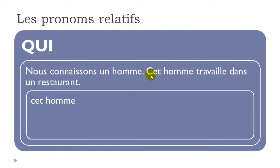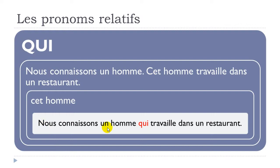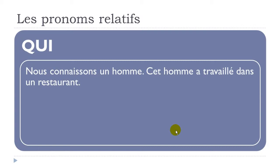So the combined sentence becomes: 'nous connaissons un homme qui travaille dans un restaurant'. It could be a person, as in that example, but it could also be an object or a thing. Let's see the same sentence with the passé composé: 'nous connaissons un homme' — 'cet homme a travaillé dans un restaurant'.